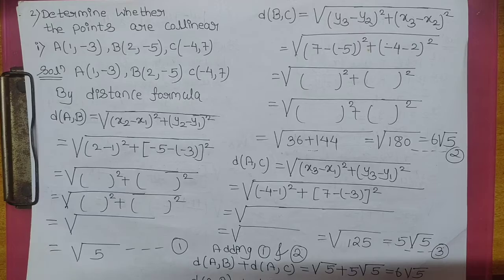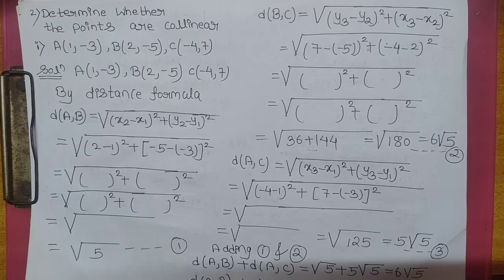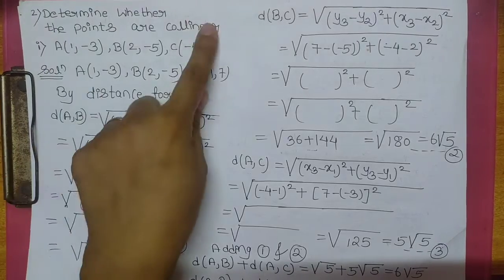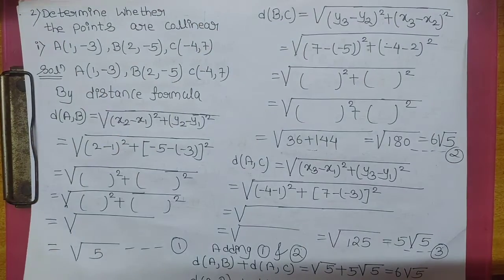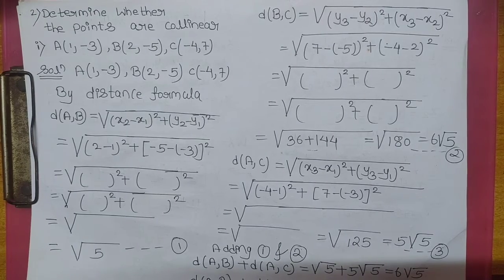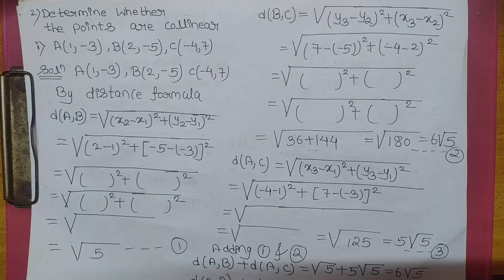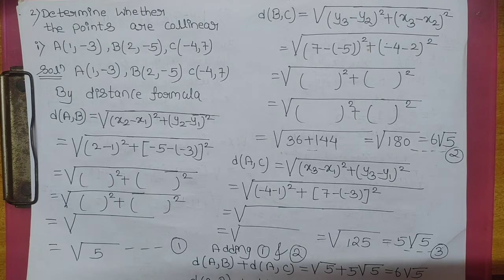Agar aap is question ko read karoge, to is me kya lika hai? Determine whether the points are collinear. Now, what is the meaning of collinear? When points are in same line, that is said to be collinear.